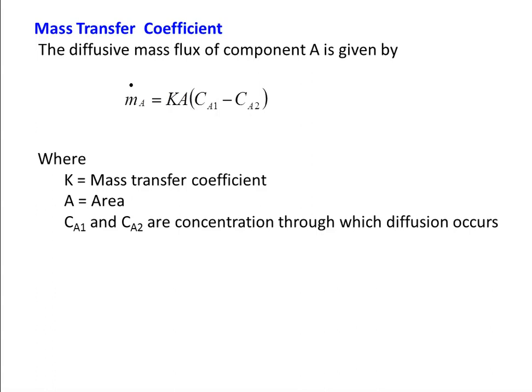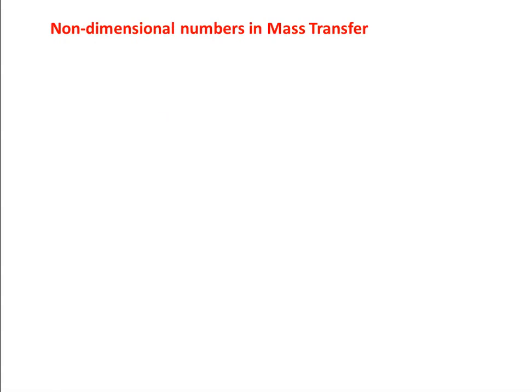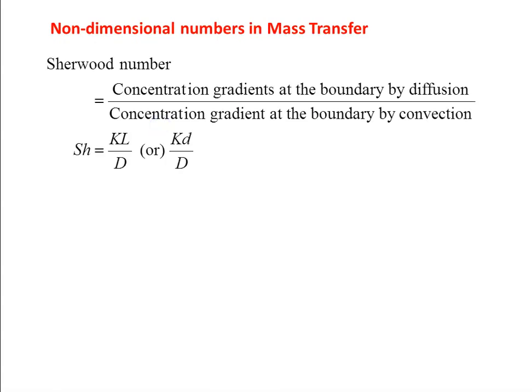This equation is very much similar to the convective heat transfer equation. Here, K is the mass transfer coefficient. In convective mass transfer, the main objective is to determine K, the mass transfer coefficient, using the correlations. There are some non-dimensional numbers connected with convective mass transfer calculations.